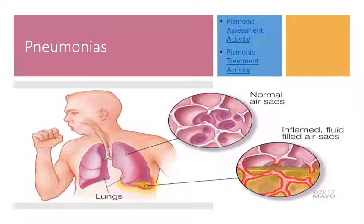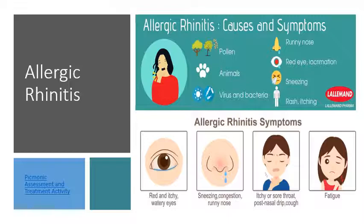Pneumonia is an infection that inflames the air sacs in one or both lungs, causing fluid or pus to build up, with resulting cough with phlegm, fever, chills, and difficulty breathing. It can be caused by bacteria, virus, or fungi. Allergic rhinitis, or hay fever, is inflammation of the nose related to the immune system's overreaction to airborne allergens. Symptoms include runny or stuffy nose, sneezing, red itchy watery eyes, and swelling around the eyes, treated with antihistamines and avoidance of triggers.